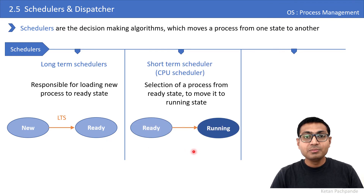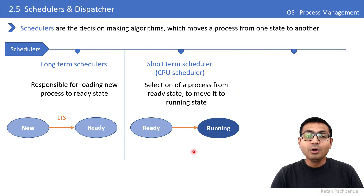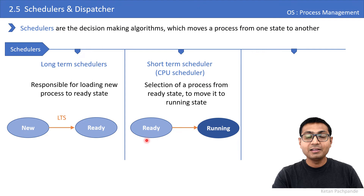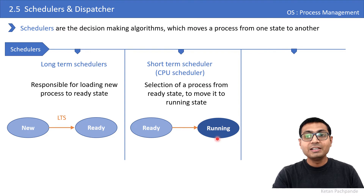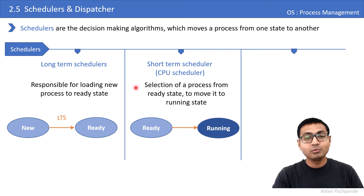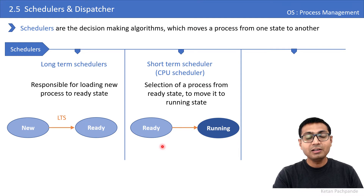The second scheduler is the short-term scheduler, also called the CPU scheduler. Out of n processes which are in the ready state, one process is selected by the CPU scheduler and assigned the CPU for execution. There are CPU scheduling algorithms which decide which one of these n processes should be selected to run on the CPU.